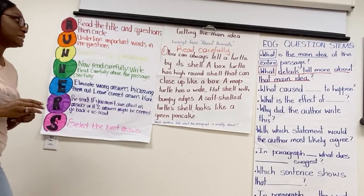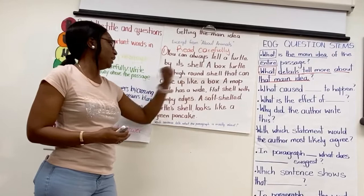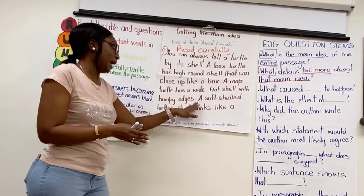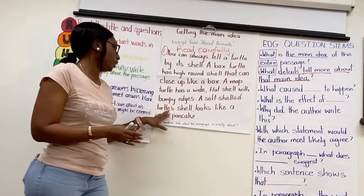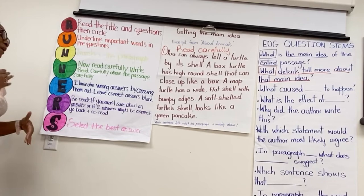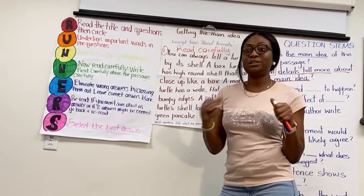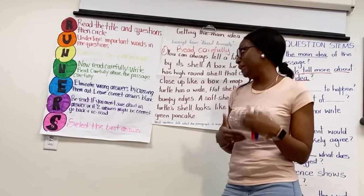This is to help me read carefully. Now we're going to read. I've read my passage. Now, we're going to eliminate wrong answers by crossing them out. We don't have the multiple choices here, but in that case you will go back to your questions and strike out those answers that are totally incorrect.